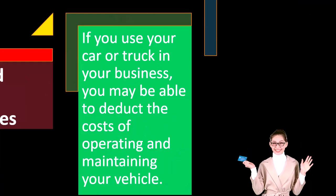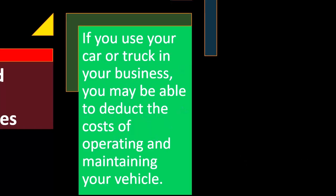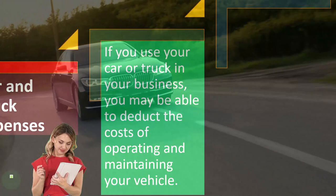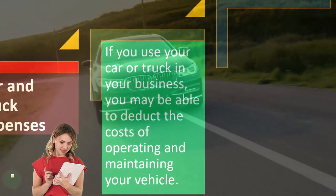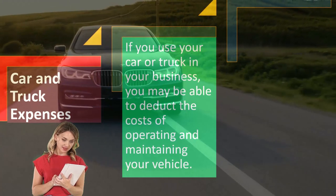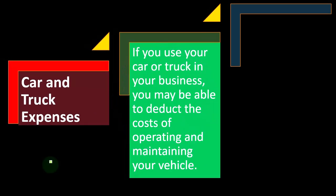We can track the actual expenses, in which case we have the added burden of recording the vehicle on the books as an asset, depreciating it, dealing with possible limitations on depreciation methods for automobiles, and tracking all expenses related to the automobile while trying to break out business versus personal use. Alternatively, there is a more simplified method — the mileage method — which is easier because normally you would just track the miles driven for business.